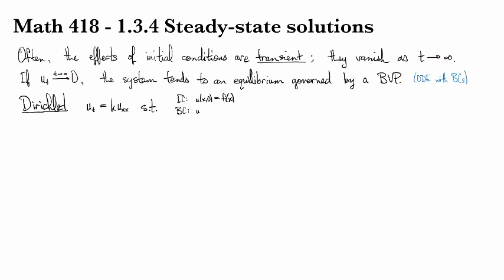We have some boundary conditions: we fix u at one end to be T1, temperature one, and we'll have u at the other end to be fixed equal to temperature two. Those are our boundary conditions. It's Dirichlet boundary conditions because we're fixing the value of u.